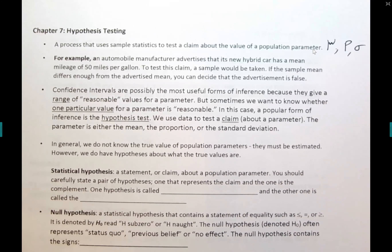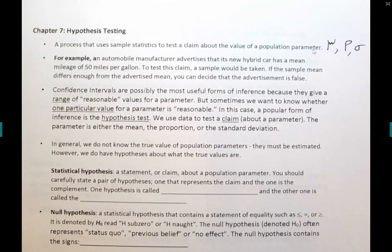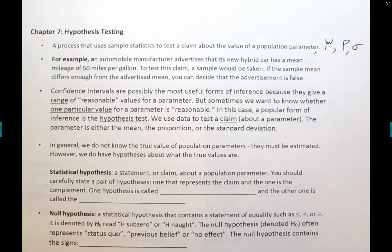For example, do you know the percent of people who drink coffee in the United States? You cannot know that, because in order to know you have to ask every single person in the United States. If 70 million out of 325 million say they drink coffee, then it's 70 over 325. But we don't know that, and we cannot do it because it costs so much money and time to survey every single person.